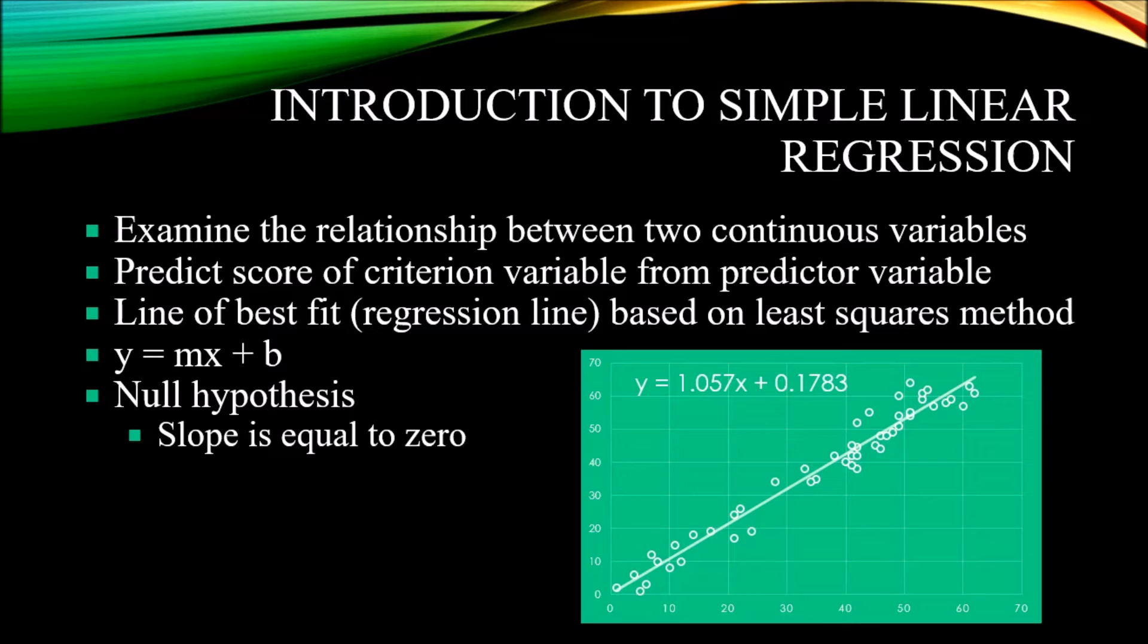y equals mx plus b, where y is that outcome variable score, the value that we're trying to predict. x is the score that we are observing, so the assignment score. y would be the comprehensive exam score. m is the slope, and that's the amount of increase or decrease we see in the outcome variable for every one unit of change in that x variable. And then b in this regression line equation is the y-intercept. So that's the value of y when x is zero. So it's where the regression line crosses the y-axis.